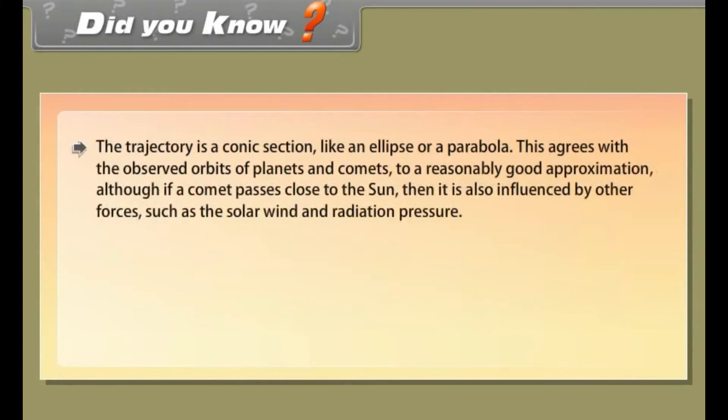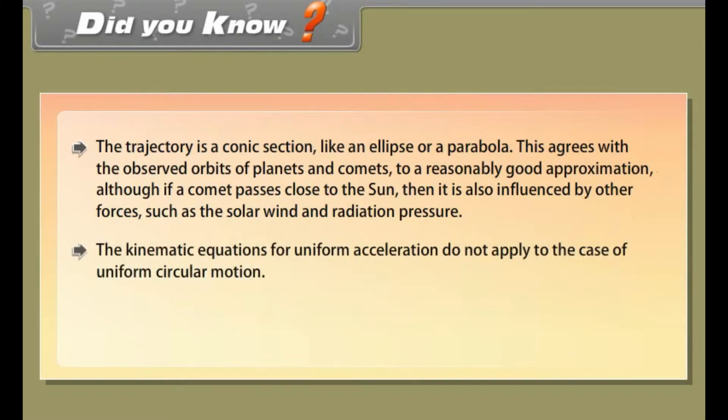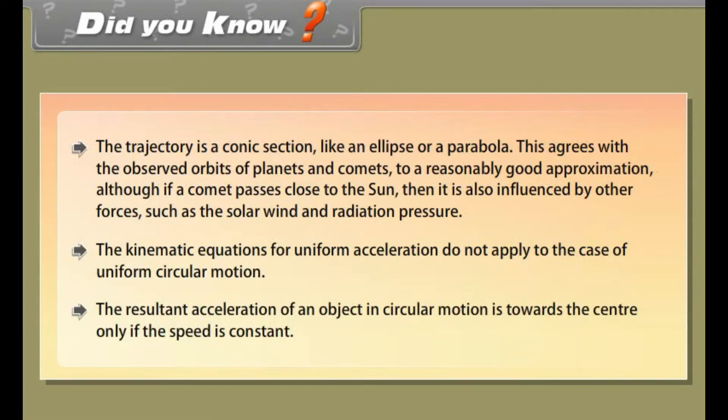The trajectory is a conic section like an ellipse or a parabola. This agrees with the observed orbits of planets and comets to a reasonably good approximation. Although, if a comet passes close to the sun, then it is also influenced by other forces such as the solar wind and radiation pressure. The kinematic equations for uniform acceleration do not apply to the case of uniform circular motion. The resultant acceleration of an object in circular motion is towards the center only if the speed is constant.